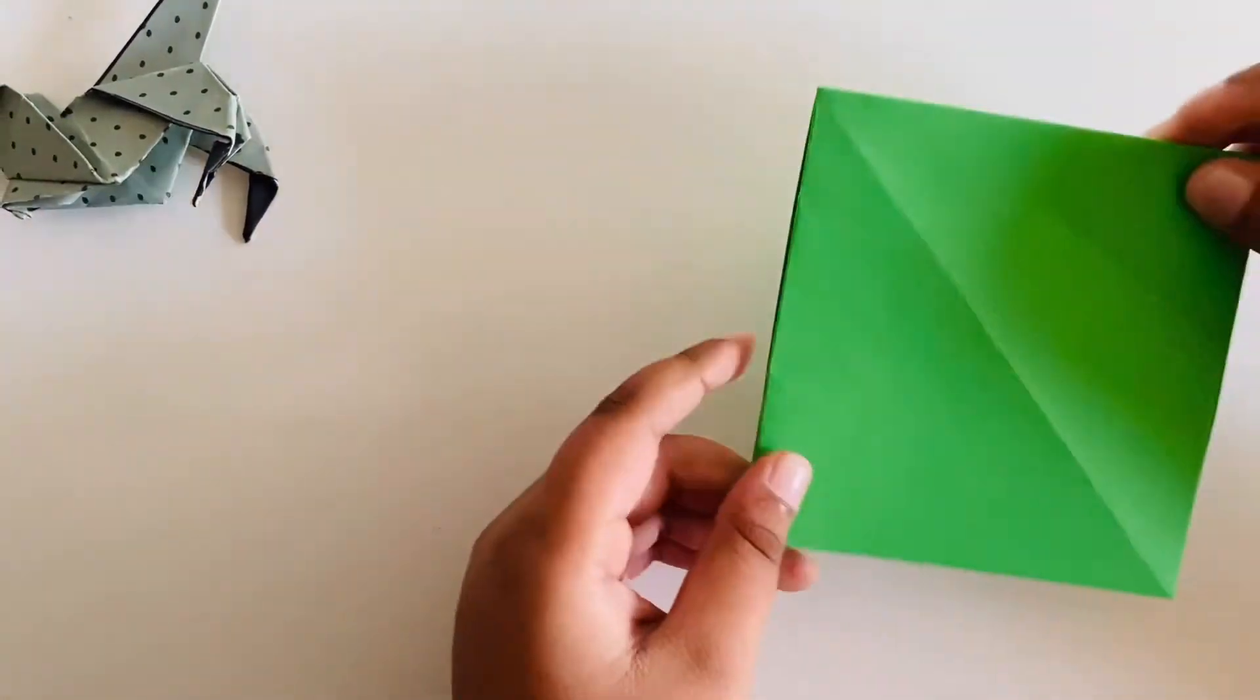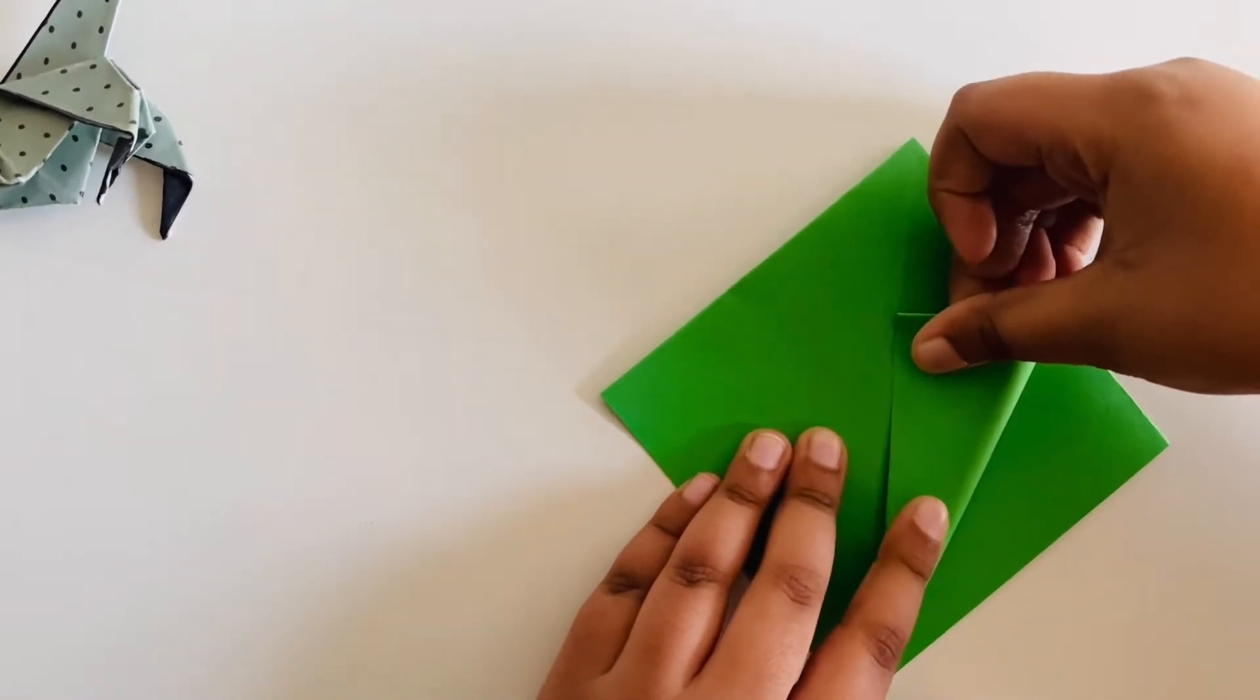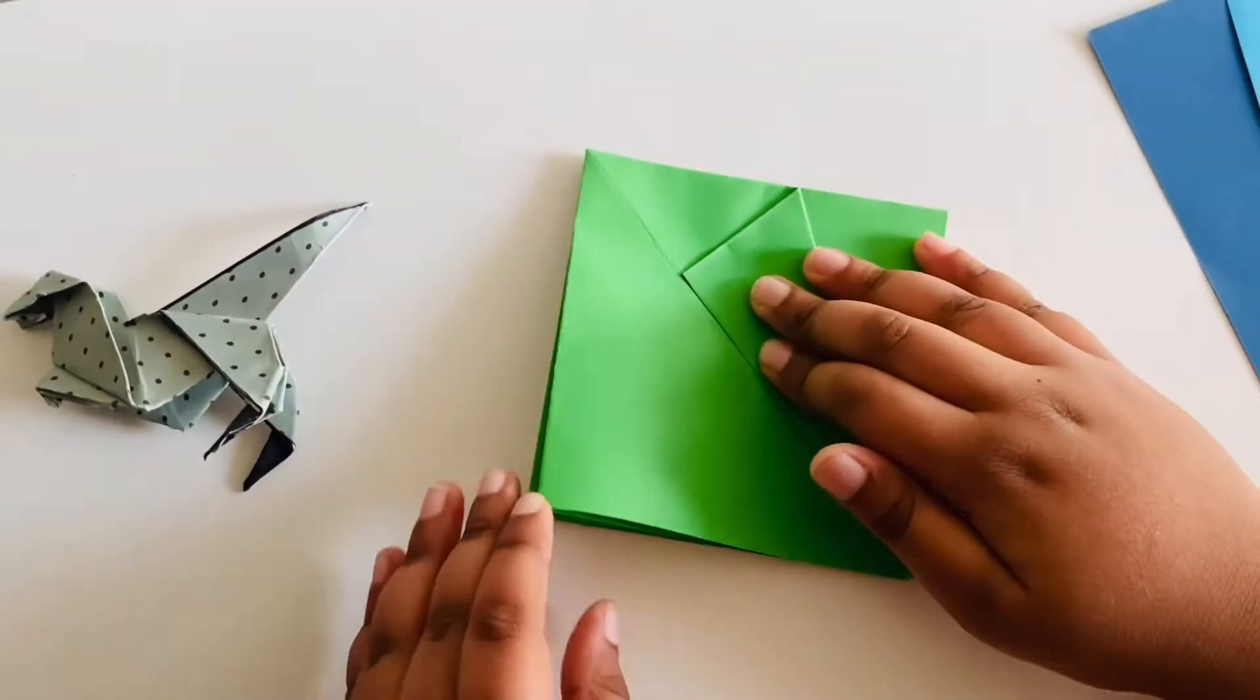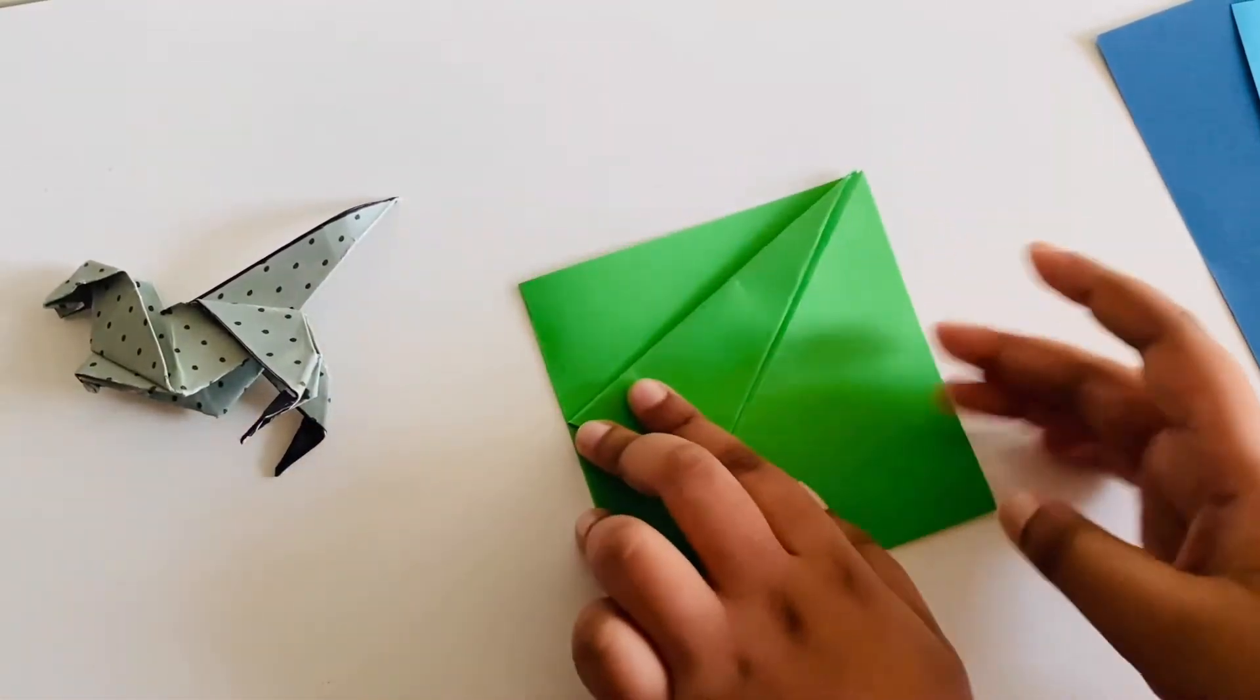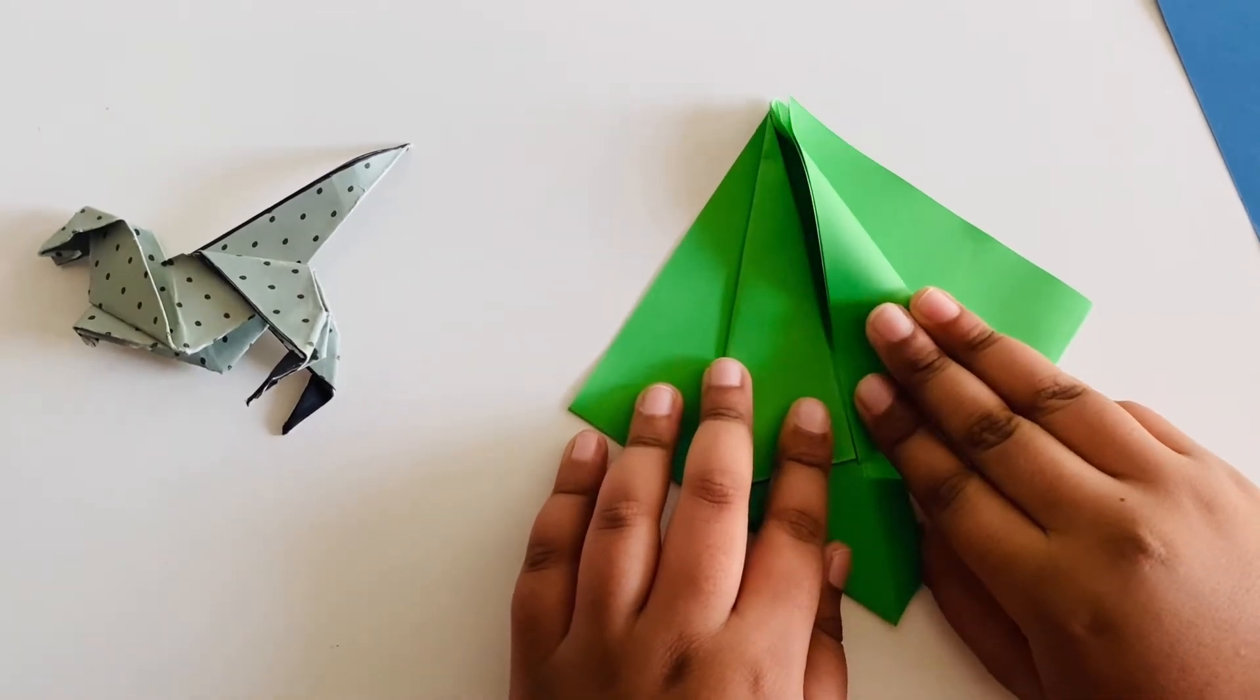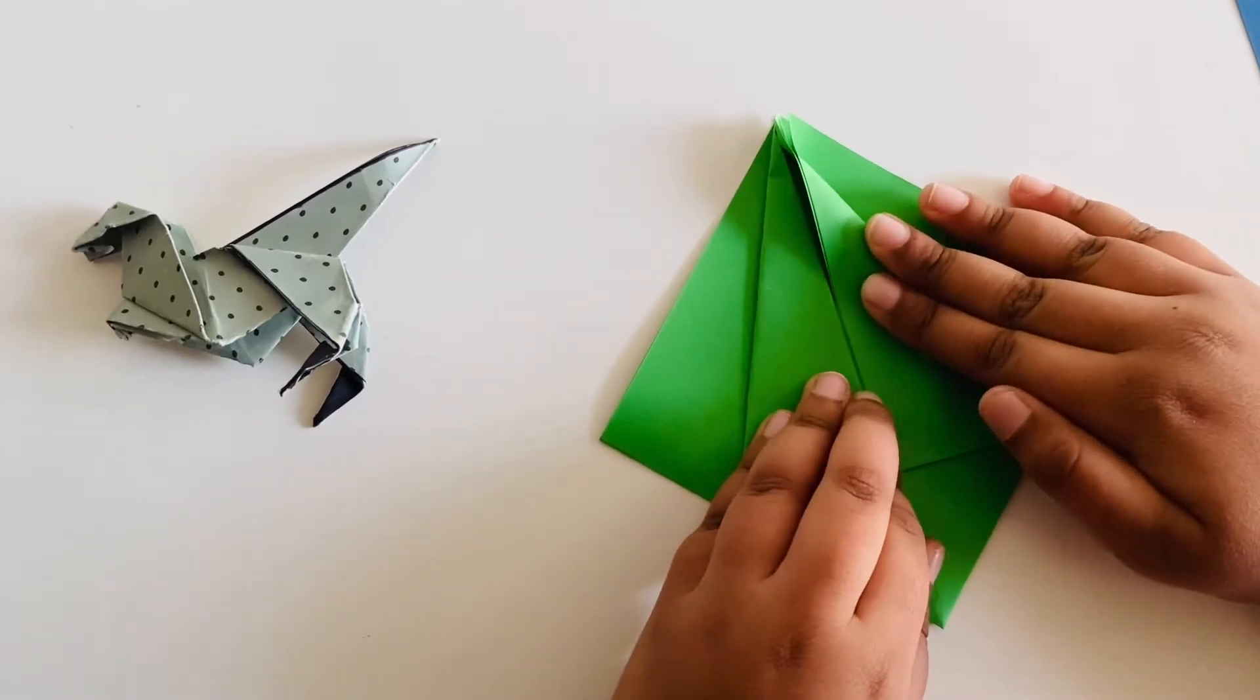Then you would have your primary base. After that you need to make a fold like this. Then flip it over.